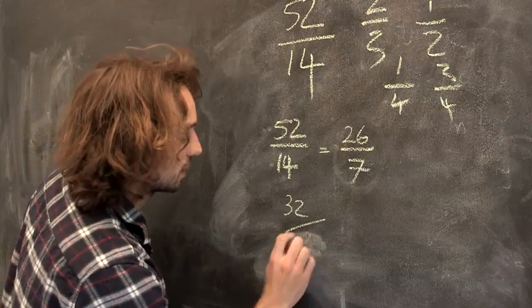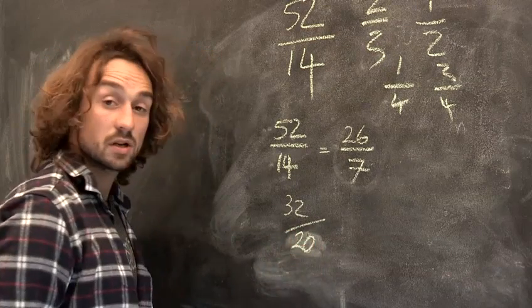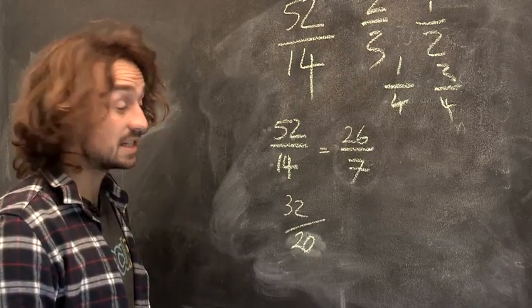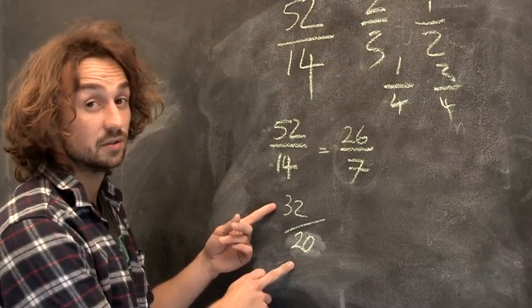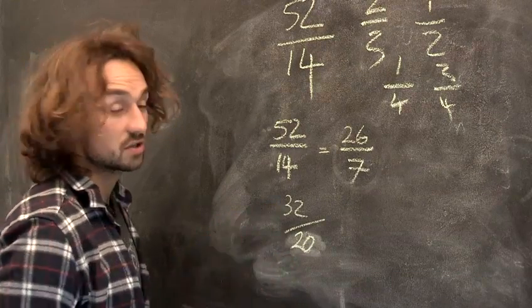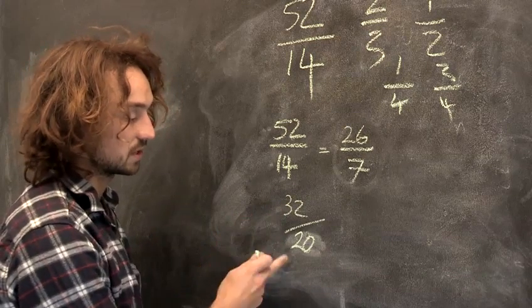So we'll change that to 20. So like I always say, start with 2 because it's easiest. There are other numbers that go into these two, but we'll start with 2. So what divides into 32 and 20?